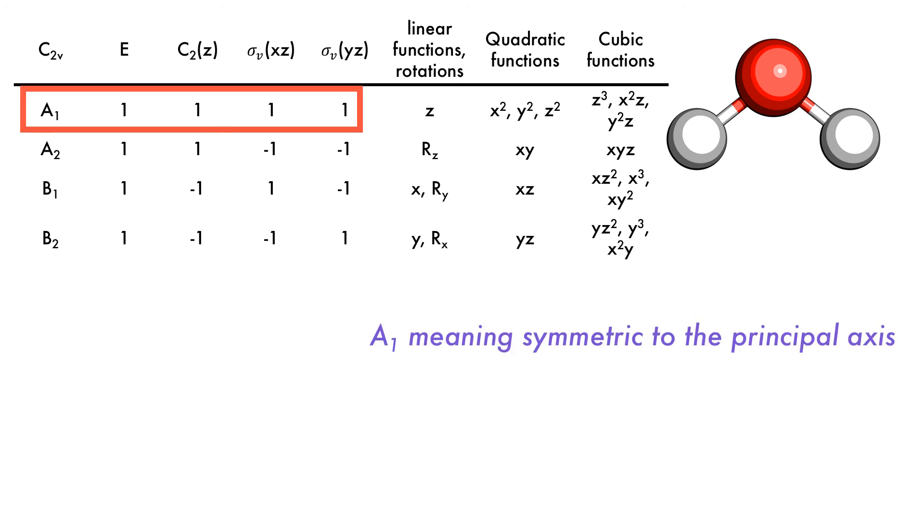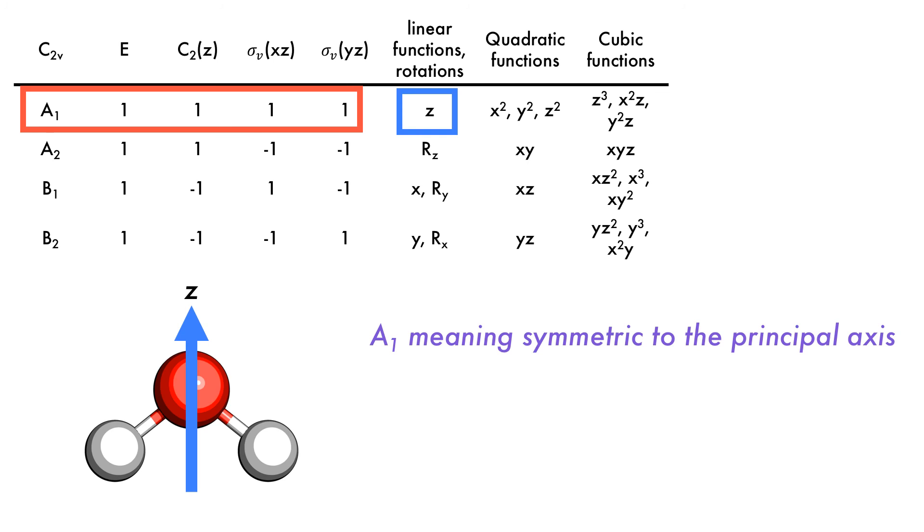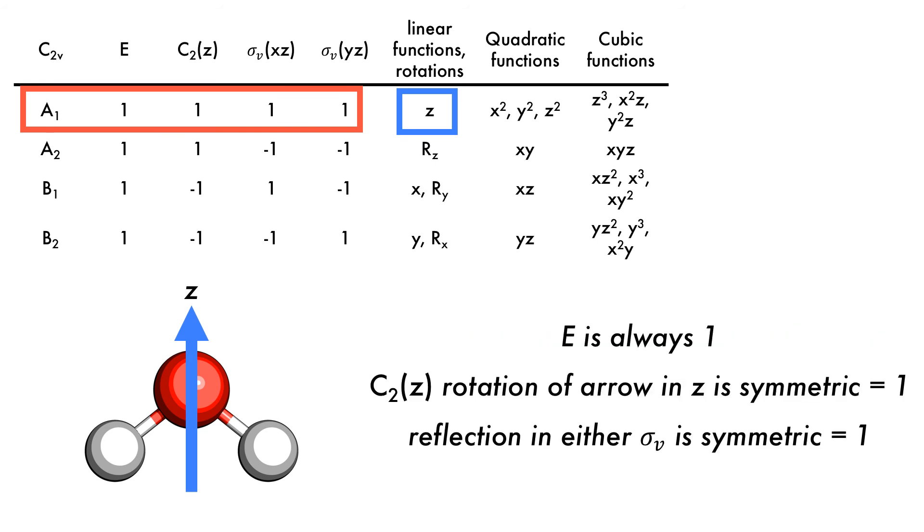If we look at the first line, A1, we know that this is going to be symmetric with respect to the principal axis. The numbers to the right are its representation. Since the linear function of A1 is Z, it is said that Z is the basis for A1. Z conventionally contains the principal axis. Armed with this knowledge, the next step is to perform the various operations on the Z axis of the water molecule. Remember that E will always be one because nothing changes under this symmetry operation. Rotation of the arrow in the Z axis leaves it unchanged, which gives a value of one, and reflection in the Z plane, either XZ or YZ will leave it unchanged, meaning that it has a value of one.